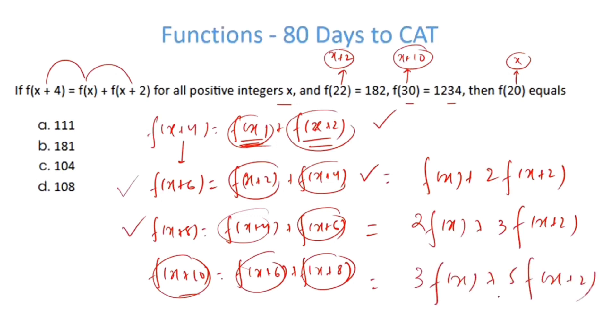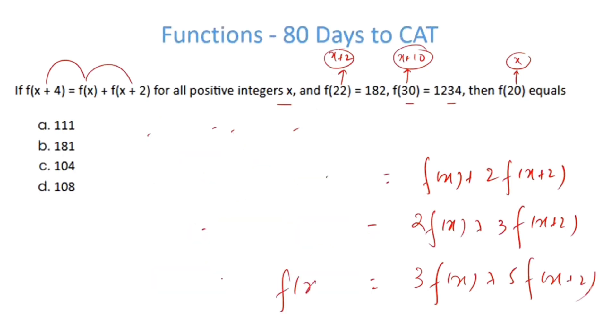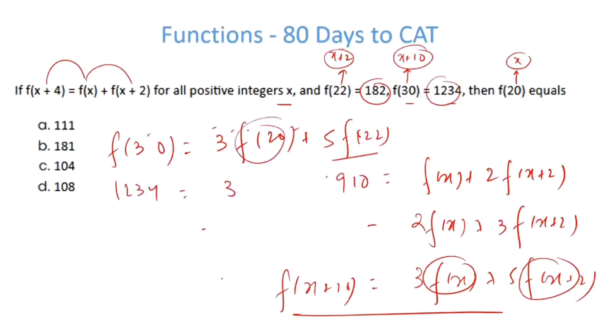The more you practice, the easier you catch the pattern and the faster you solve these problems. fx plus 10 has been represented as fx and fx plus 2. Now you just put the values. What is fx plus 10? I put x is equal to 20. f30 becomes 3f20 plus 5f22. I know f22 is 182, so this becomes 910. f30 is given as 1234 and this is 3. I need to find out this, so therefore f20 becomes 108. The answer is answer option d.